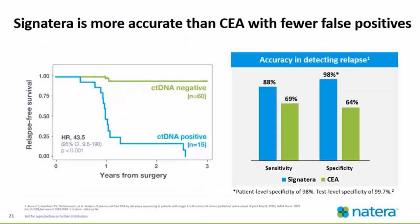Signatera is more accurate than CEA with fewer false positives. These two graphs show that Signatera is both highly sensitive and predictive, therefore more accurate. We can see with the two bar graphs that Signatera is certainly more sensitive when compared to CEA, and certainly more specific as well when compared to CEA. It limits those false positive results.